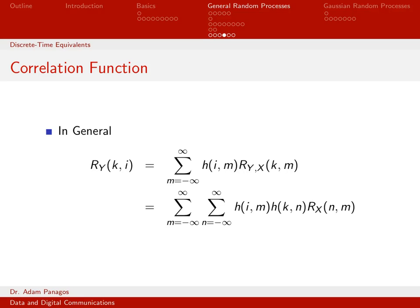Using that cross-correlation expression, we can develop an equation for the autocorrelation function. In general, the output autocorrelation function is a sum of the possibly time-varying impulse response with the cross-correlation function. Substituting the general cross-correlation expression yields a large double summation. In general, this is what must be computed to find the output autocorrelation function of a discrete time system given the possibly time-varying impulse response and the possibly non-wide-sense stationary input process.